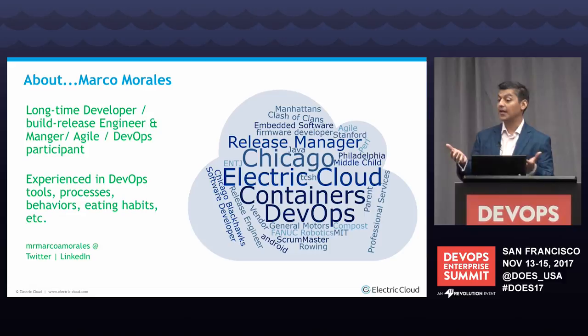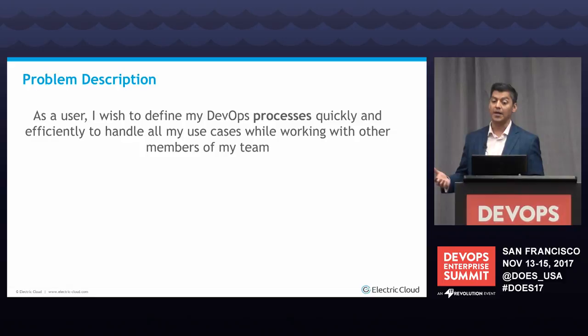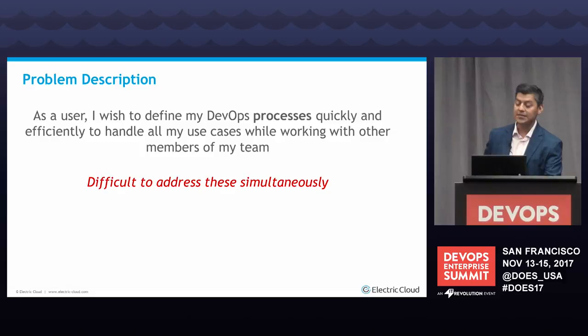The problem, the way I thought about this is: as a user, I want to define my DevOps processes quickly. I want to do it efficiently and I want to be able to handle my use cases for my automations. I also want to work with my members and other teams. But it's difficult to do all these simultaneously. The reason I see it as difficult tends to be the UI.